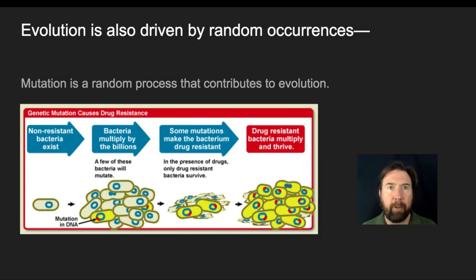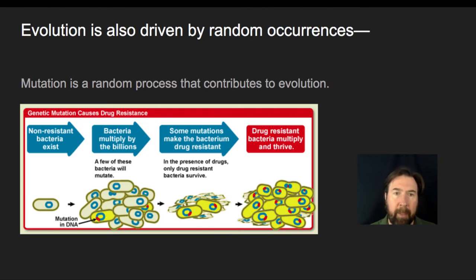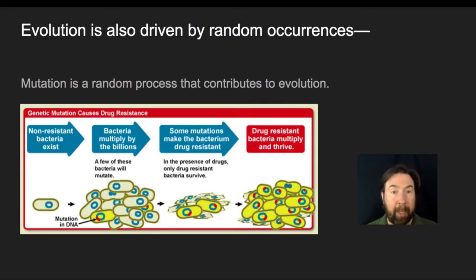Let's talk about how evolution can be driven by random occurrences. Mutation is the random process that contributes to evolution. Most bacteria reproduce asexually, churning out identical copies. But if a mutation occurs within a gene, the formation of that mutation is a random event. The survival of bacteria with a resistance mutation and the spread of that resistance are not random — the antibiotic provides the selective pressure, killing some and not others, and those with the ability to survive reproduce and pass on those genes.